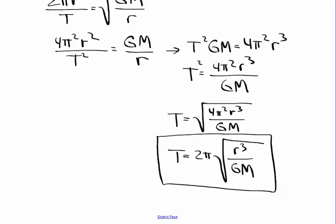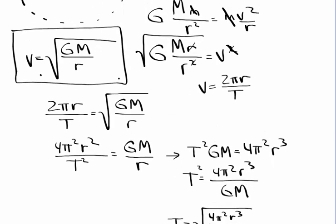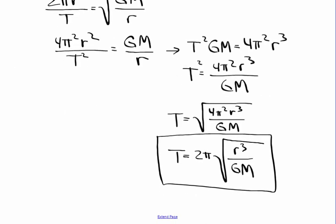I want to scroll back up and look at the speed of the satellite equation real quickly. One of the things that you can see here is that there's a lot of constants here. Big G is a constant. The mass of the planet is also a constant. The only thing that really is a variable here is the speed and the radius. And what you can see here is that if I were to increase the radius or the distance away that a satellite is, it's actually going to slow it down. It's going to move slower if it's further away.